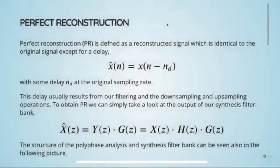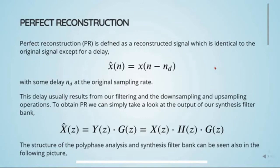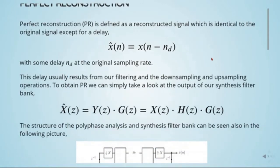Our goal is to obtain perfect reconstruction. Perfect reconstruction is defined as a reconstructed signal which is identical to the original signal except for a delay. Here we have our reconstructed signal and we have the original signal with the delay. Nd is this delay at the original sampling rate, and this delay usually results from our filtering and the downsampling and upsampling operations.